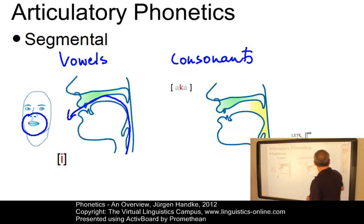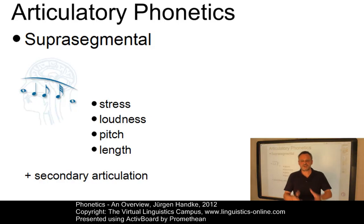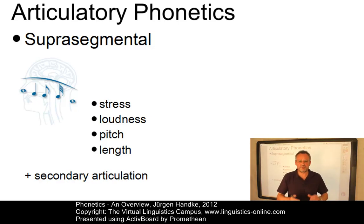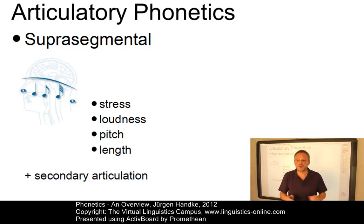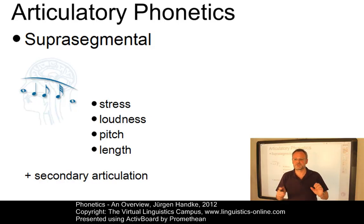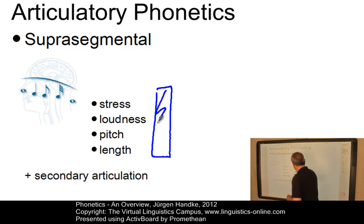Vowels and consonants are the basic segments of speech, just like notes are basic segments in music. Together, vowels and consonants form syllables, then larger units, and eventually utterances. Superimposed on the segments are a number of additional features known as suprasegmental or prosodic features. They do not characterize a single segment, but a succession of segments. The most important suprasegmental features are stress, loudness, pitch, and length.